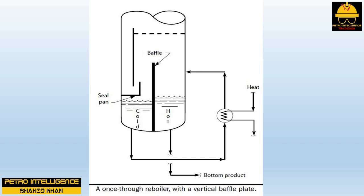If the reboiler is fouled, opening the startup line will not help. This picture shows a once-through thermosyphon reboiler with a vertical baffle. Process-wise it is the same as the previous configuration. Note that the reboiler return liquid flows only to the hot side of the tower bottoms. Putting the reboiler return liquid to the colder side of the tower bottoms represents poor design practice — while most designers do it this way, it is still wrong.